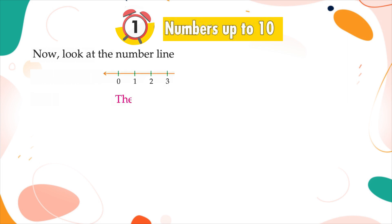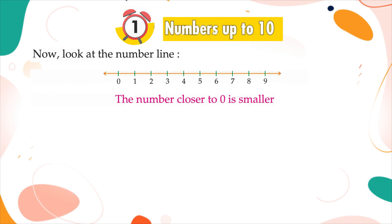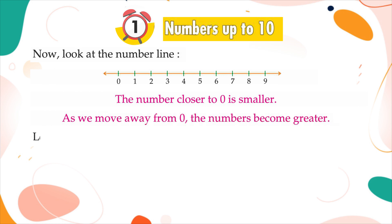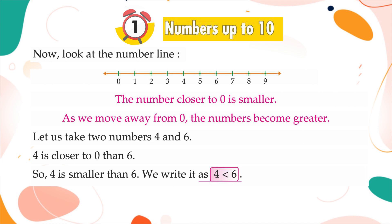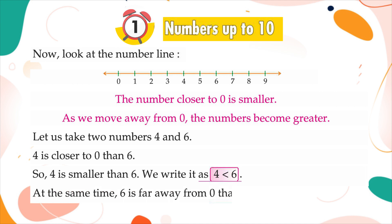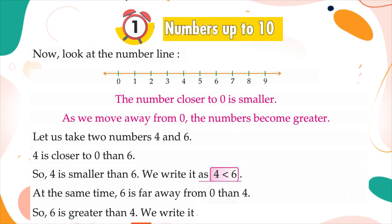Now look at the number line. The number closer to zero is smaller. As we move away from zero, the numbers become greater. Let us take two numbers: four and six. Four is closer to zero than six, so four is smaller than six; we write it as 4 < 6. At the same time, six is farther from zero than four, so six is greater than four; we write it as 6 > 4.